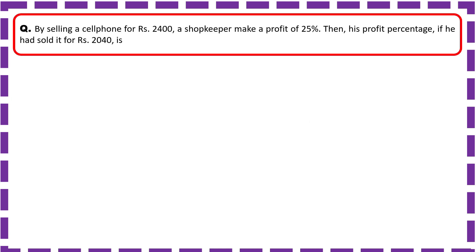Let's move on to the questions. By selling a cell phone for ₹2400, a shopkeeper makes a profit of 25%. What is his profit percent if he had sold it for ₹2040? First, understand the question: selling price is 2400 and profit percent is 25%. If we calculate the cost price, we can find out the percentage gain when SP is 2040.